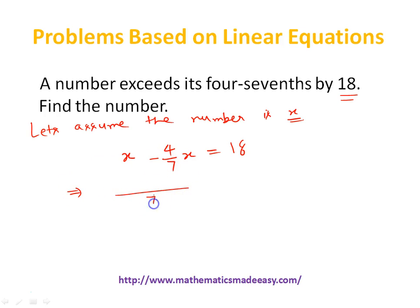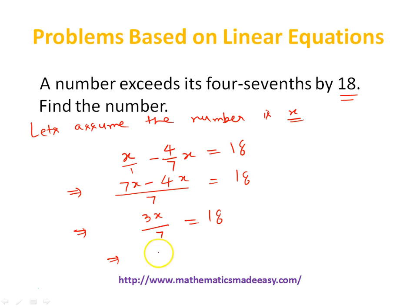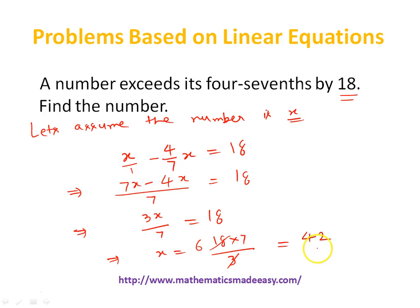Let's take LCM as 7. So (7x minus 4x) over 7 equals 18, giving 3x over 7 equals 18. So x equals 18 multiplied by 7 divided by 3. Since 3 times 6 is 18 and 6 times 7 is 42, x equals 42. So the number is 42.